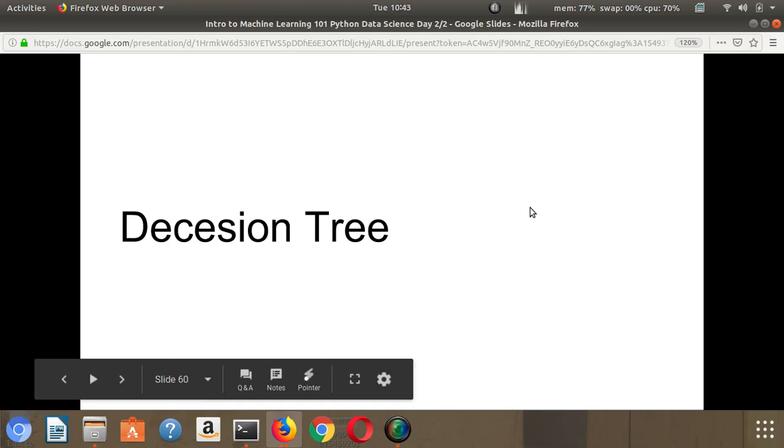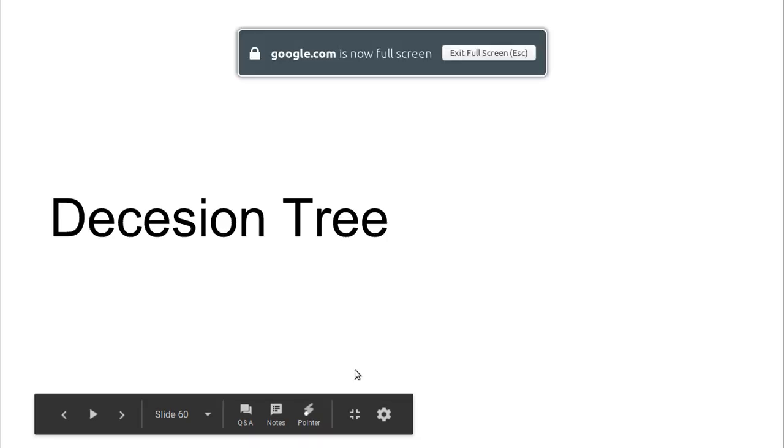Next part we are going to look at decision trees. As the name suggests, decision trees are based on decisions for different variables.